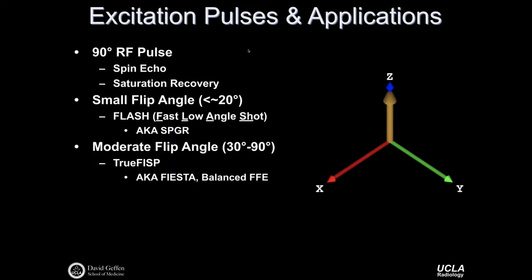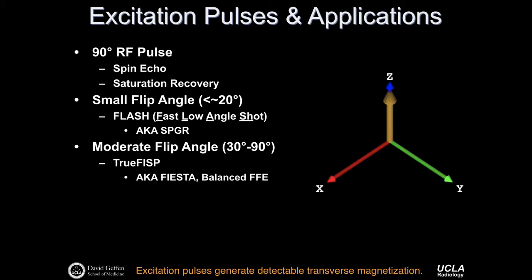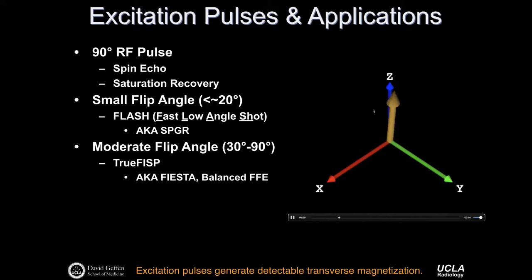Excitation pulses are used frequently. 90 degree RF pulses are used in spin echo sequences and saturation recovery sequences. Small flip angles—less than about 20 degrees—are common for a sequence called fast low angle shot (FLASH), also called spoiled gradient echo imaging. Moderate flip angles between 30 and 90 degrees are common for true FISP, sometimes called FIESTA, balanced FFE, or balanced steady-state free precession. The point is that excitation pulses generate transverse magnetization typically used for subsequent imaging.